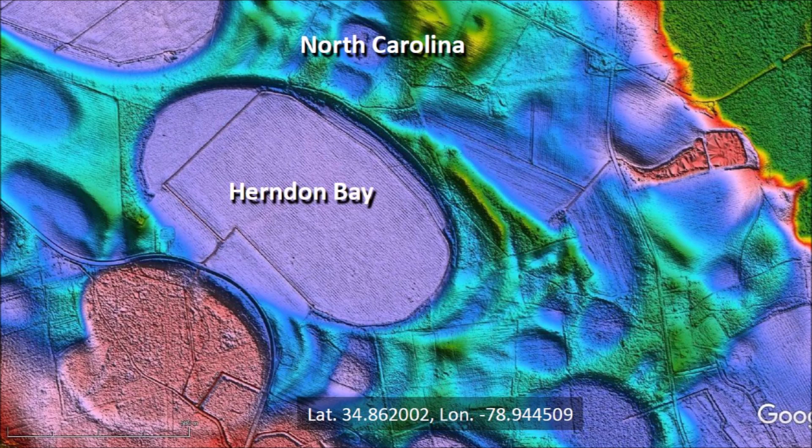Some geologists have doubts about the aeolian and lacustrine mechanisms. A university professor with whom I communicated recently said that it does not seem possible that wind and waves can create the elliptical shape, or there would be more evidence of raised rim deposition through time that tracks a transition to more elliptical shapes. He also mentioned that this is particularly true for the small bays, as there can't be much wave and wind energy in these small basins to move sediment.